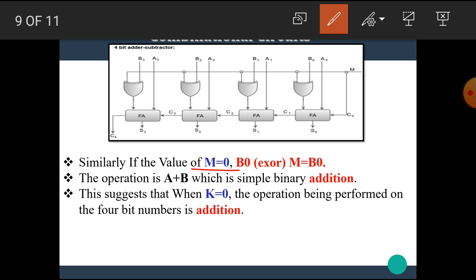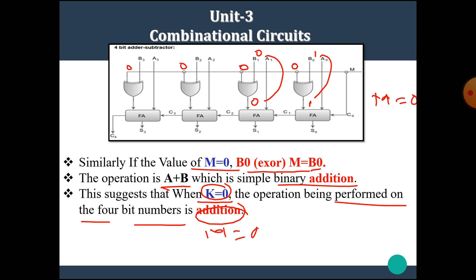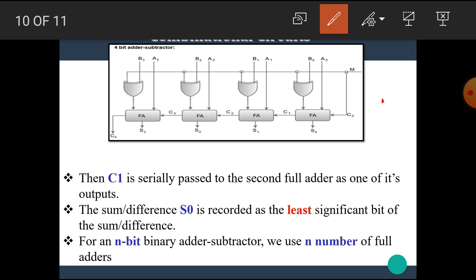Similarly, if the value of M equals 0, then for example if B0 is 1, we get 0 XOR with 1 which gives 1. If B0 is 0, then 0 XOR with 0 is 0. That means we get the output as it is — B0 XOR with M gives B0. The operation is A plus B, which is simple binary addition. This suggests that when M equals 0, the operation performed is addition. So when M equals 1 the circuit performs subtraction, and when M equals 0 the circuit performs addition.